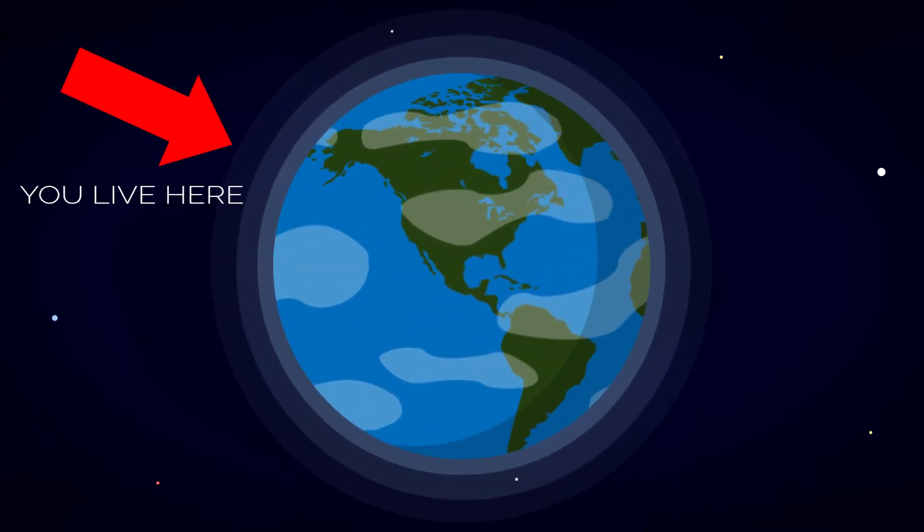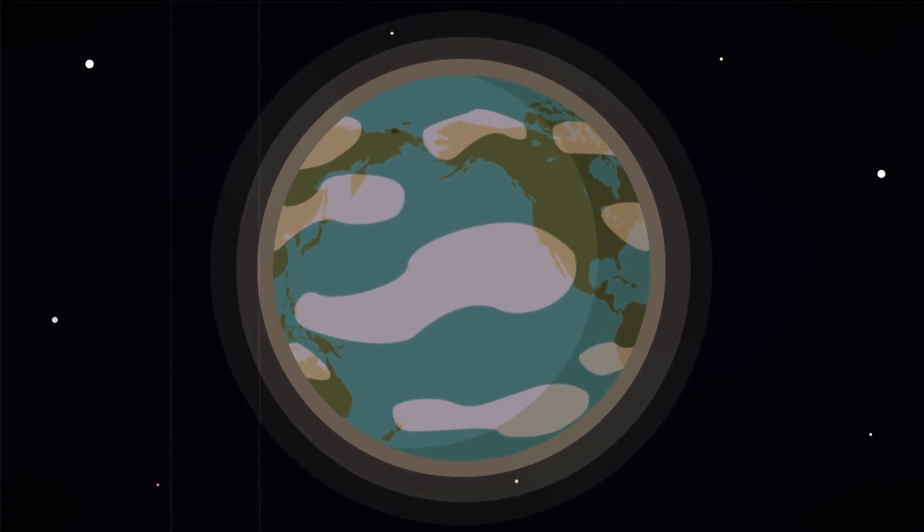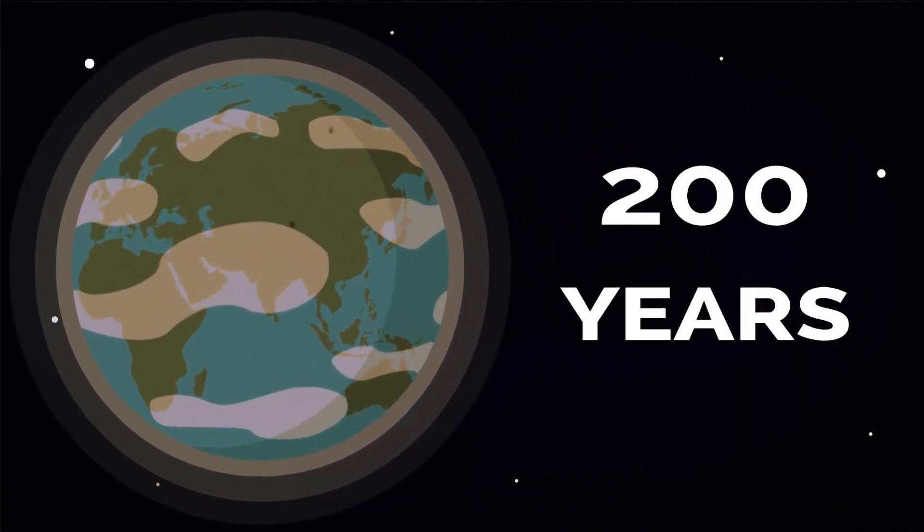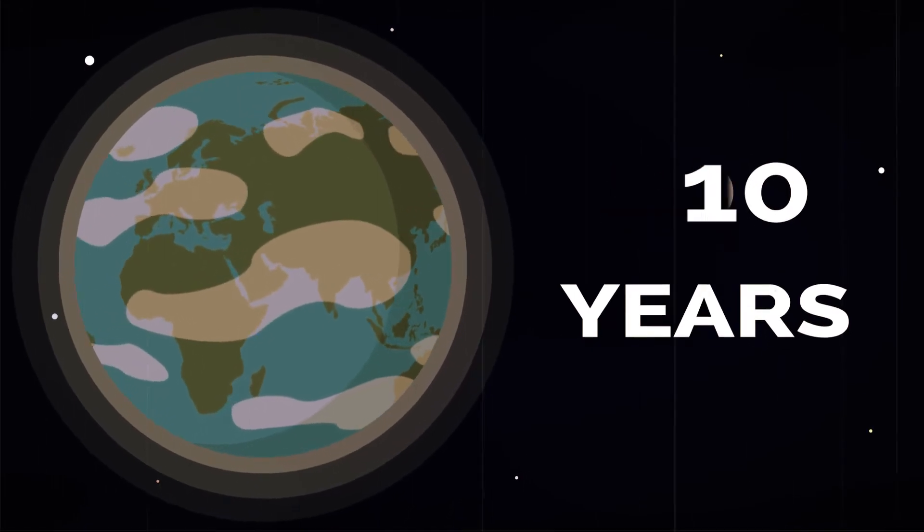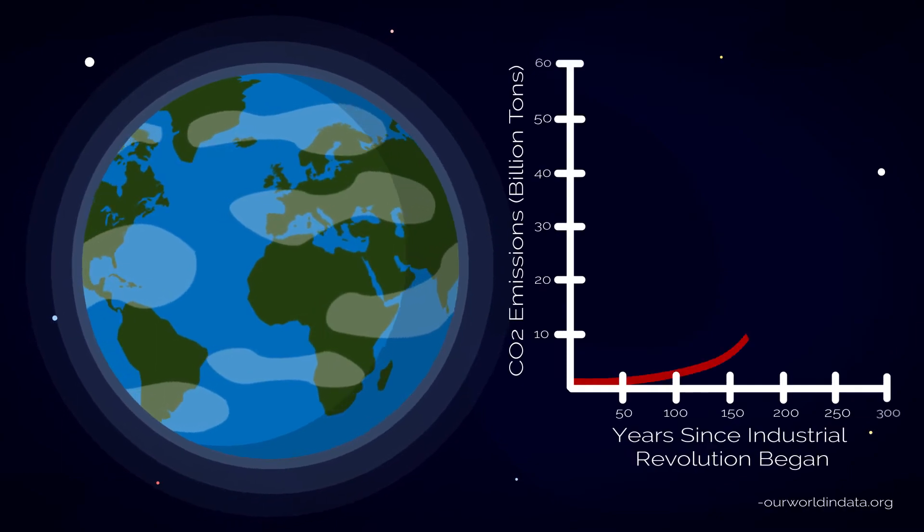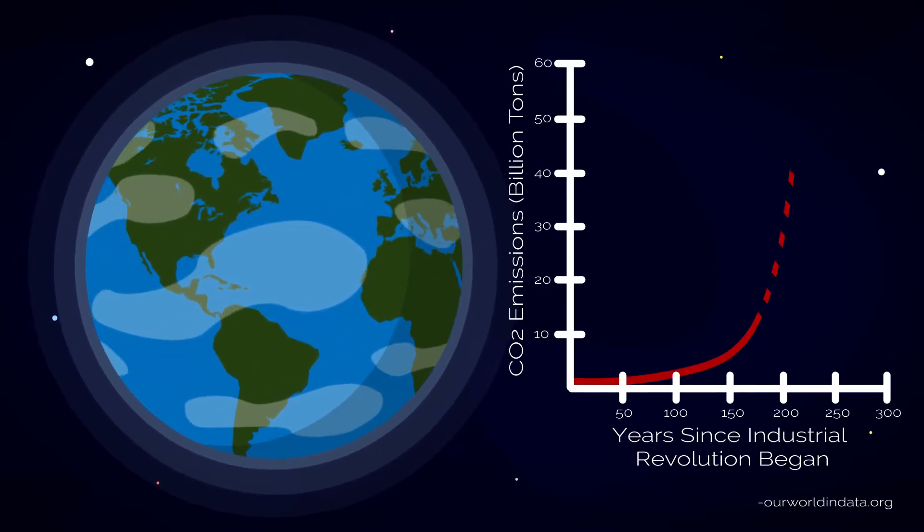This is Earth, our home. Ever since the start of the Industrial Revolution in the early 1800s, CO2 emissions have increased more and more over the last 200 years. Just in the last 10 years alone, the world has produced more CO2 emissions than in the first 160 years since the Industrial Revolution began, and this is increasing at an alarming rate.